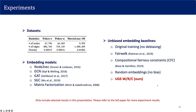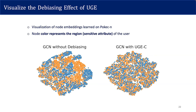To evaluate our developed methods, we conduct comprehensive experiments on three popular datasets and apply the methods on five embedding models. For baselines, we include the original training without any debiasing, a framework using compositional fairness constraints via adversarial regularizers, and random embeddings as a baseline expected to give perfectly unbiased embeddings. We first qualitatively evaluate the debiasing effect of our proposed UGE. We visualized node embeddings learned on the PokecN dataset using GCN, where node colors represent the region of users, treated as the sensitive attribute to be debiased.